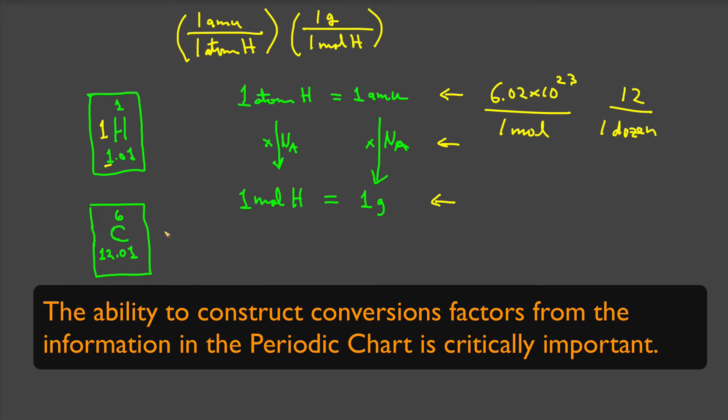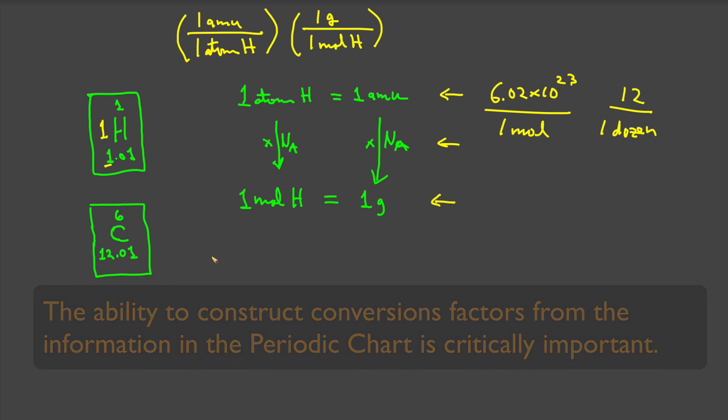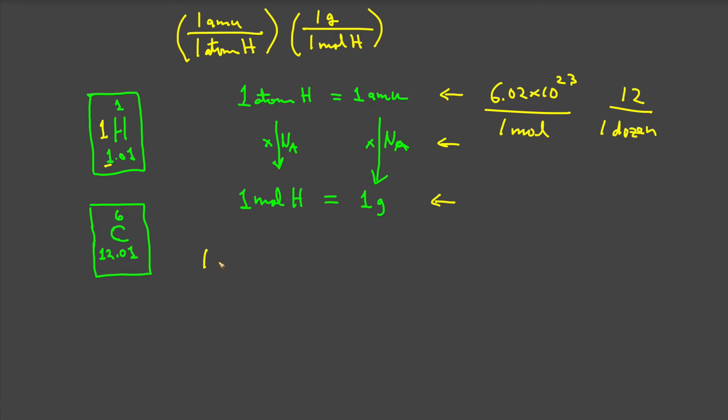Now, let's consider carbon. You can make the same interpretation for that. You can read what you see on the periodic chart as, for every one atom of carbon, it will have 12 AMU of mass.